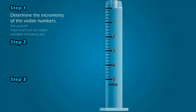Step 1: Determine the increments of the visible numbers. To find the increment, observe the visible numbers and determine how much they are increasing by. On this 5 milliliter syringe, this line represents 1 milliliter, this represents 2 milliliters, and so on. Therefore, the visible numbers are increasing in increments of one.